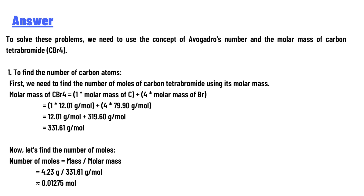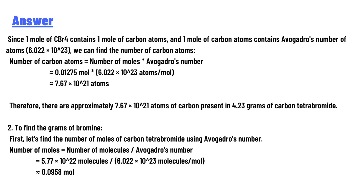That gives 12.01 g/mol plus 319.60 g/mol, equaling 331.61 g/mol. Now the number of moles equals mass over molar mass: 4.23 divided by 331.61 g/mol, which is approximately 0.01275 mol. Since one mole of CBr₄ contains one mole of carbon atoms, and one mole of carbon atoms contains Avogadro's number (6.022×10²³) atoms, the number of carbon atoms equals 0.01275 mol multiplied by 6.022×10²³ atoms/mol.